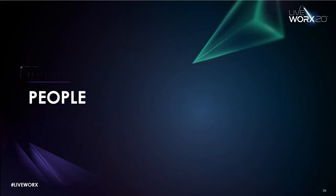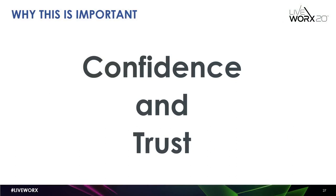Now let's talk about the most important area that will make or break your implementation: people. The people portion of your implementation is all about confidence and trust. You want your end users to know that you are going to provide them with the tools and skills necessary to do their jobs, that you're going to support them, and that Creo Parametric is the best choice for your team. You want your users to feel that they are part of a community and that you are addressing their changing needs as end users of Creo Parametric.